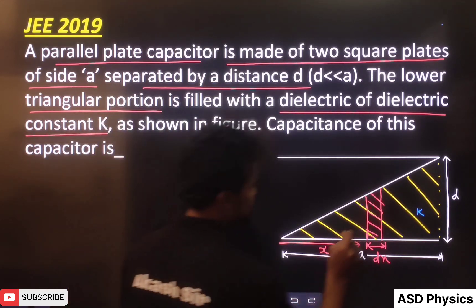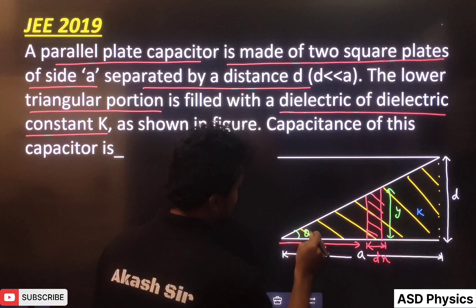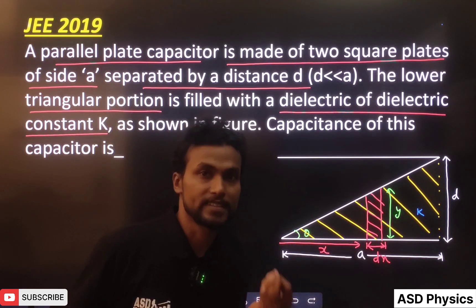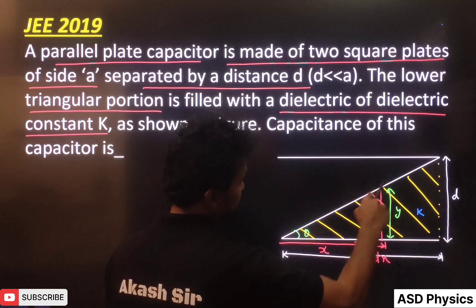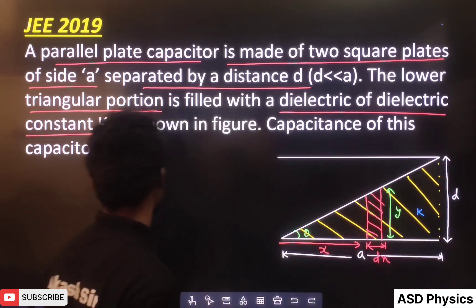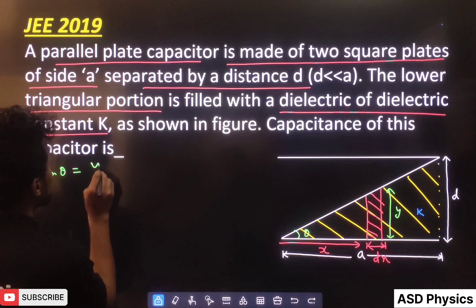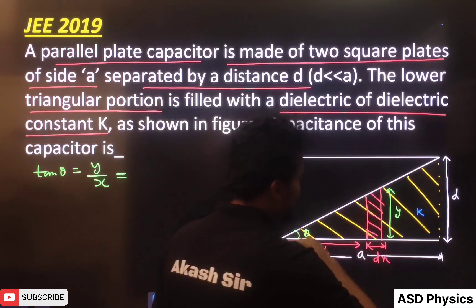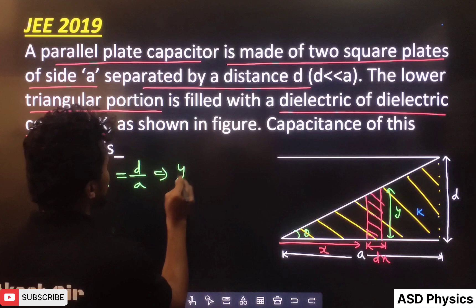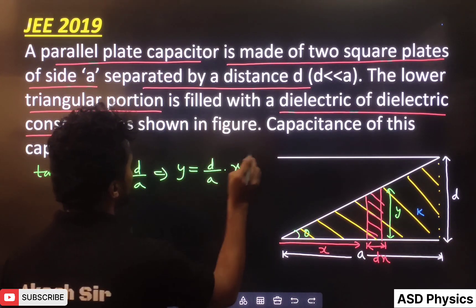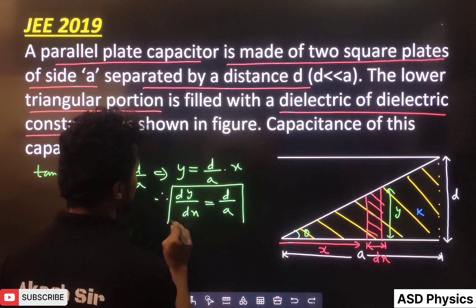At this position, the height of dielectric is y. I have taken angle theta to use triangular similarity. Can you see one triangle? Using tan theta: from the small triangle, tan θ = y/x, and from the bigger triangle, tan θ = d/a. Therefore we can write y = (d/a)·x. Hence dy/dx = d/a, which we need to remember.